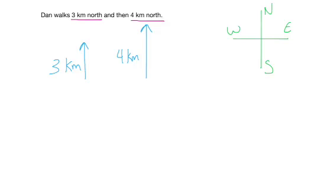Now, how do we add these together? We add them together by drawing them one after the other. We can say he walked 3 kilometers north and then 4 kilometers north. And what we get at the end, his total displacement, is something called the resultant vector.